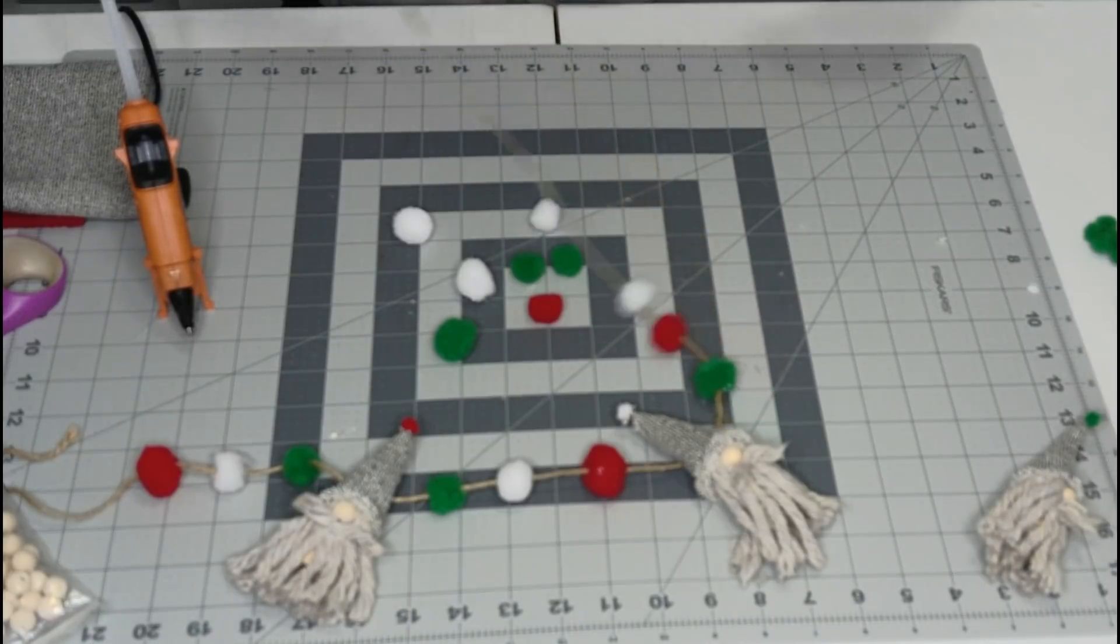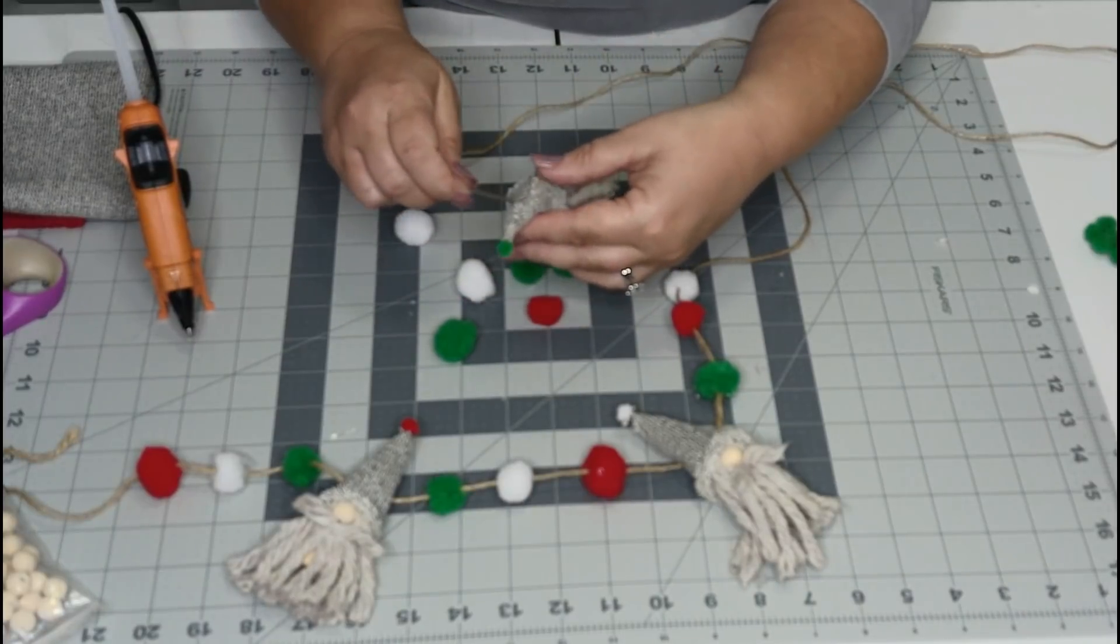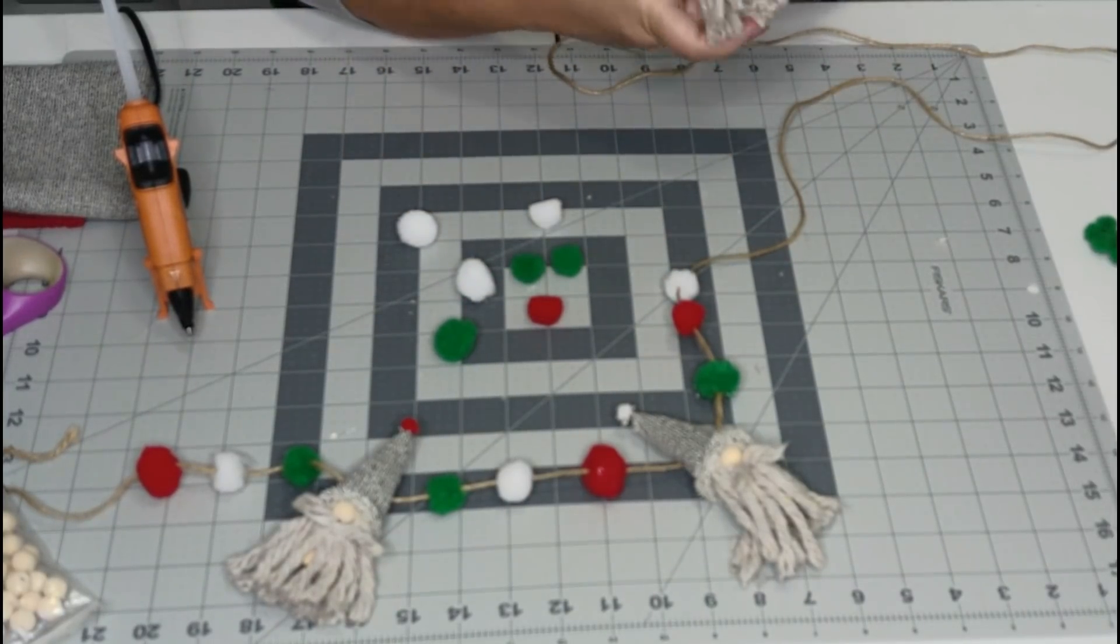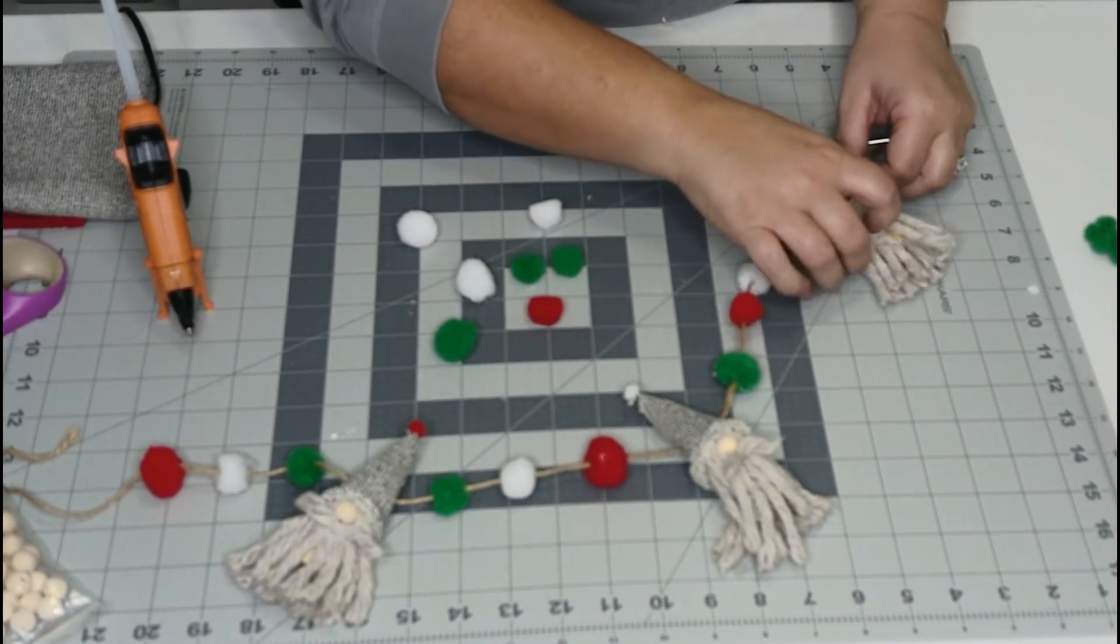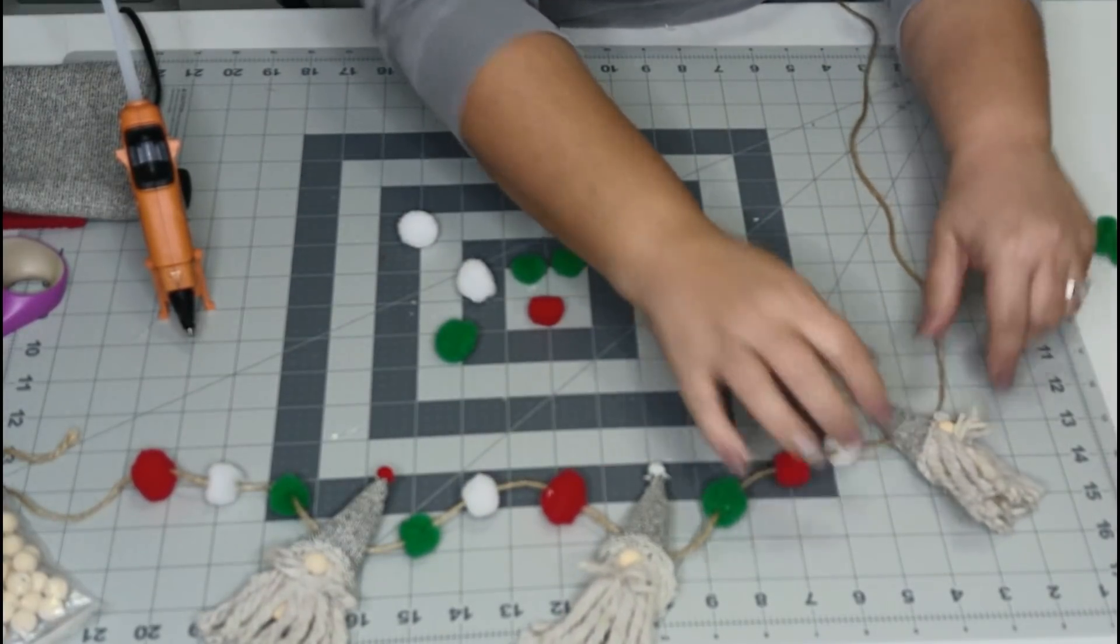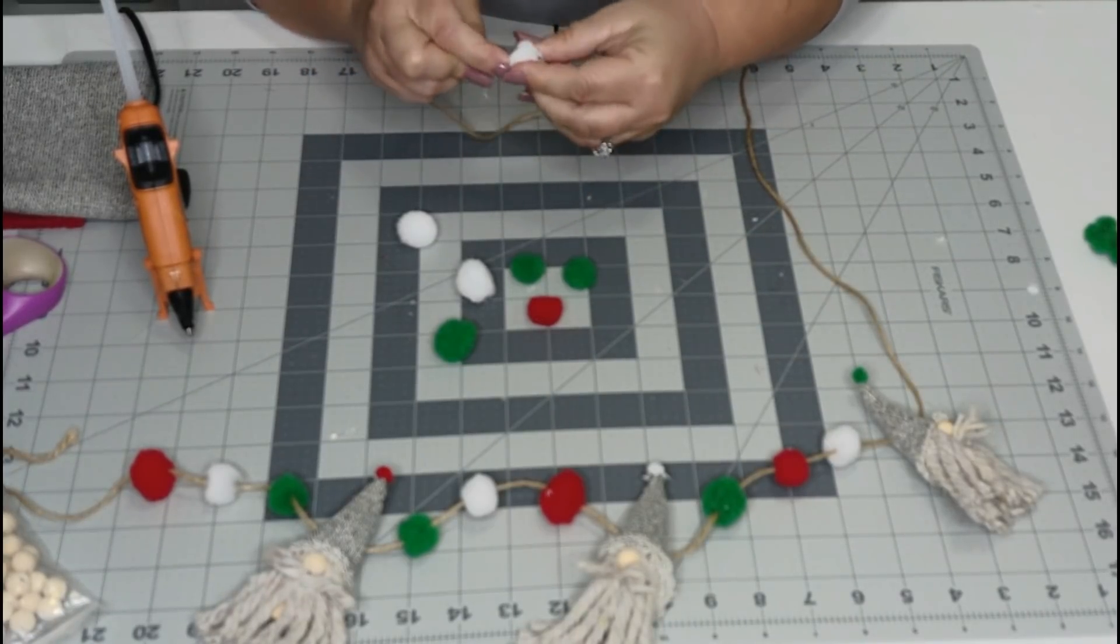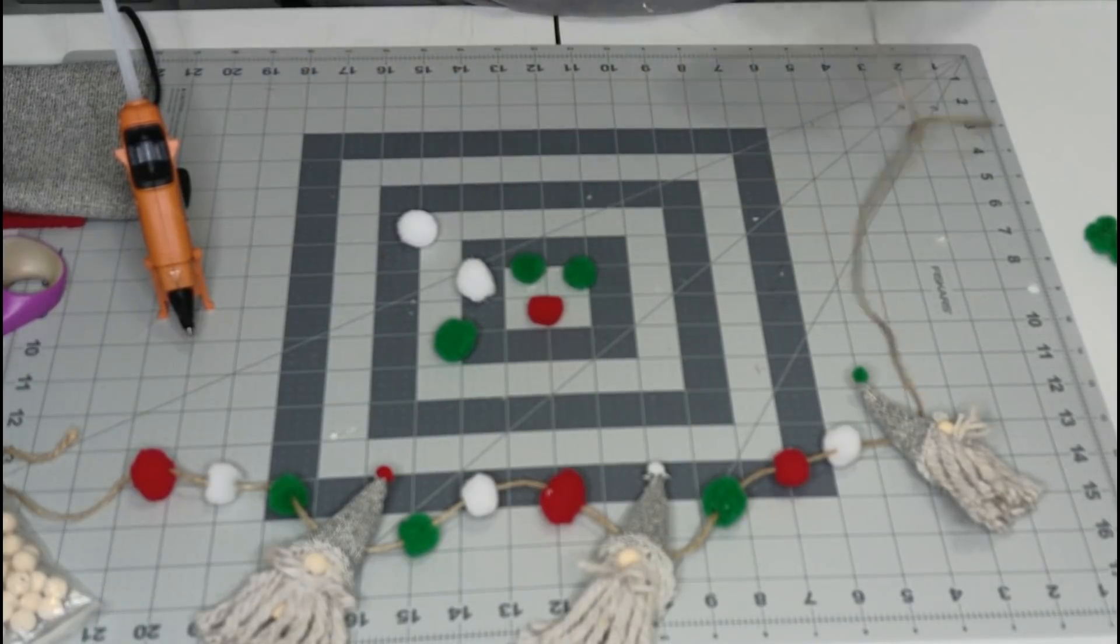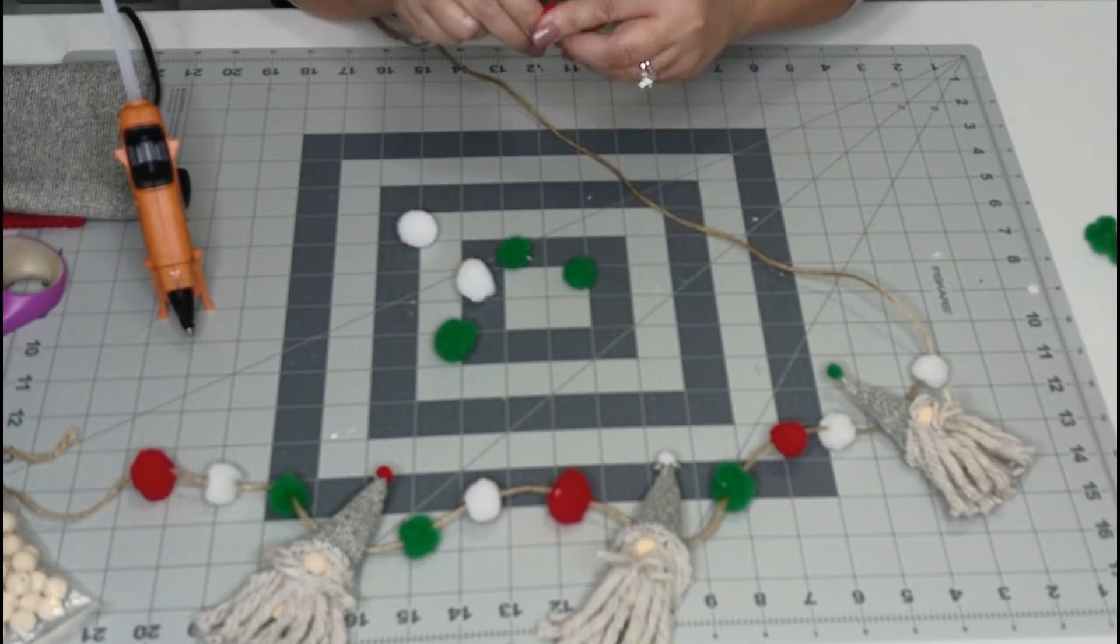Okay, so now let's put our green gnome on. And again, you want to go close to your base. We'll reverse our pattern here.